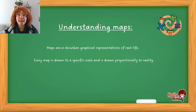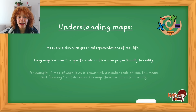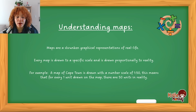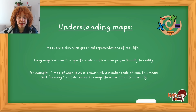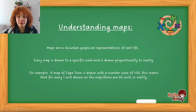What that means is that in reality if the field is bigger than the seating area, then on the map the field would also be bigger than the seating area in the same proportion. For example, a map of Cape Town is drawn with a number scale of 1 to 50. In all number scales the 1 represents the map and the 50 represents real life. So for every one unit drawn on the map it's 50 units in reality — if it's one centimeter on the map then that means it will be 50 centimeters in reality.